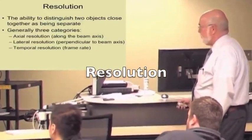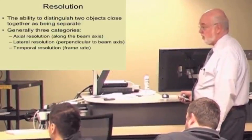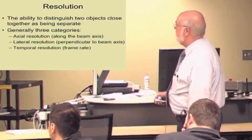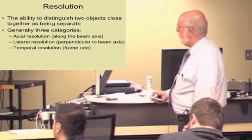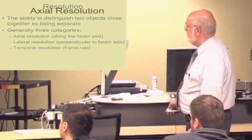A little about resolution, basically the ability to distinguish two objects that are close together as actually being two objects. We talk about three categories, and the main ones we'll talk about are axial and lateral, so let's just look at some examples here.